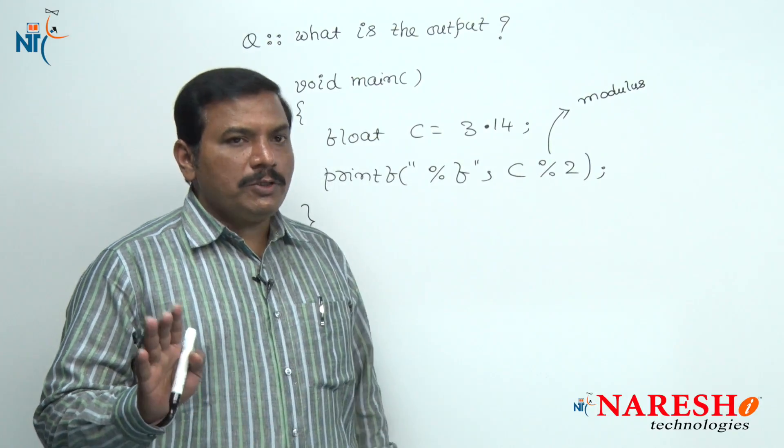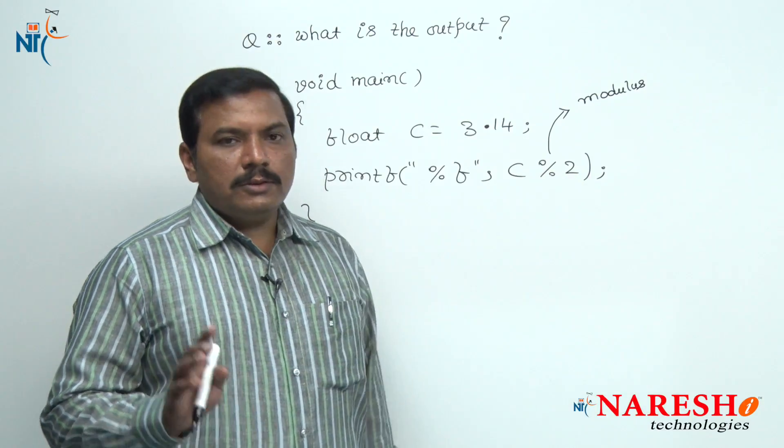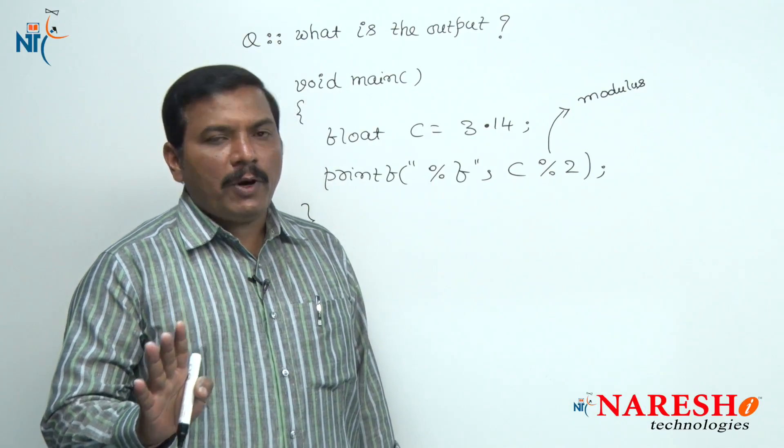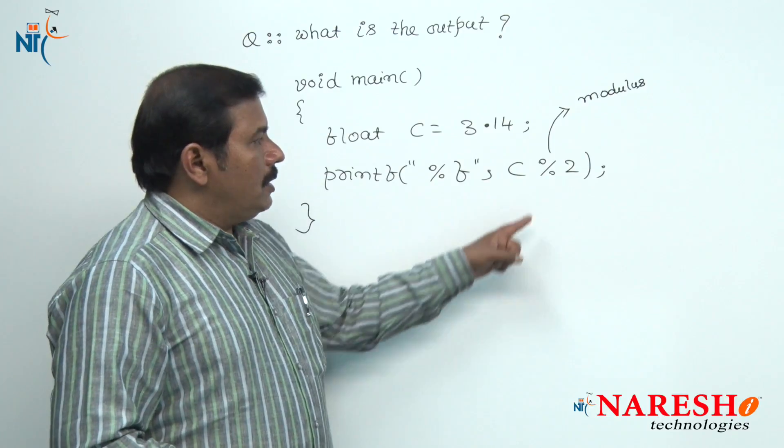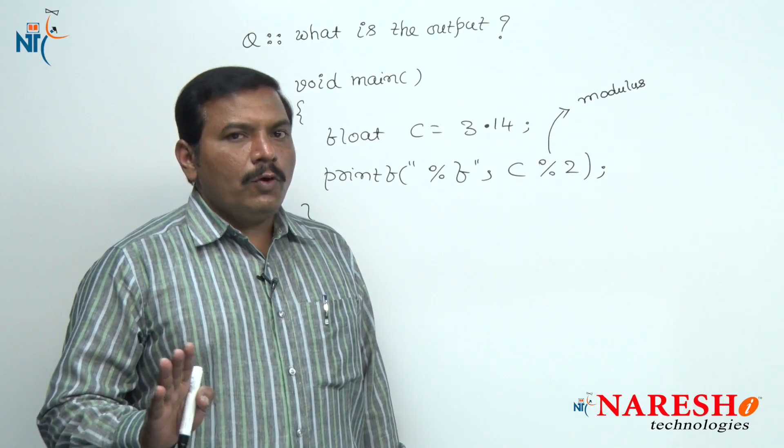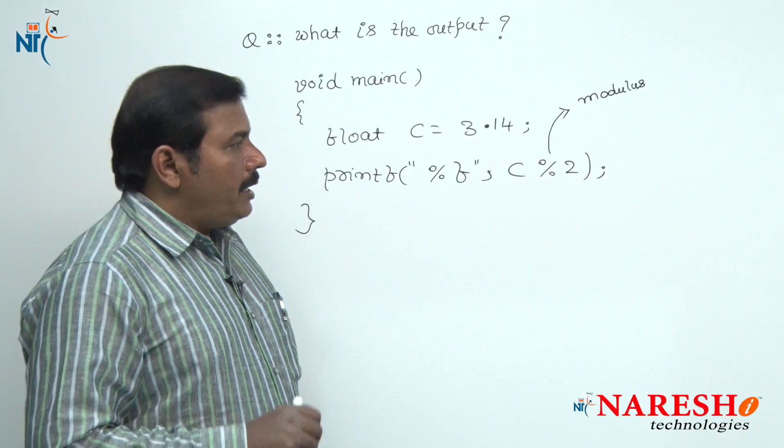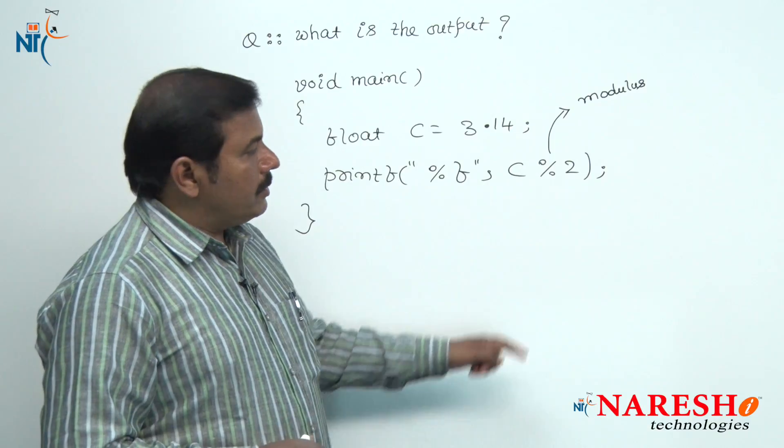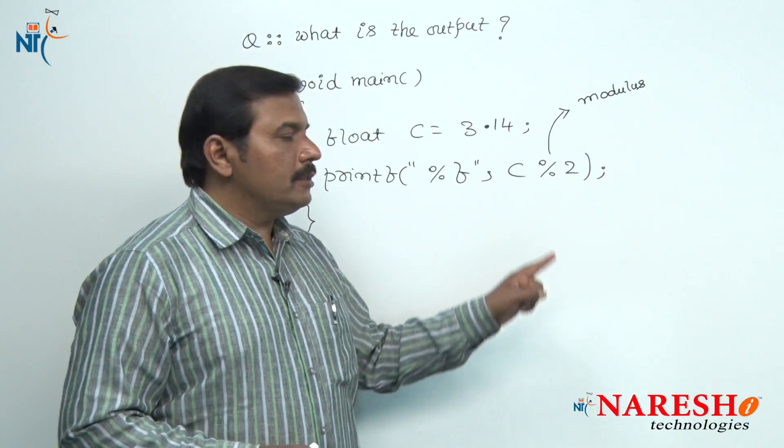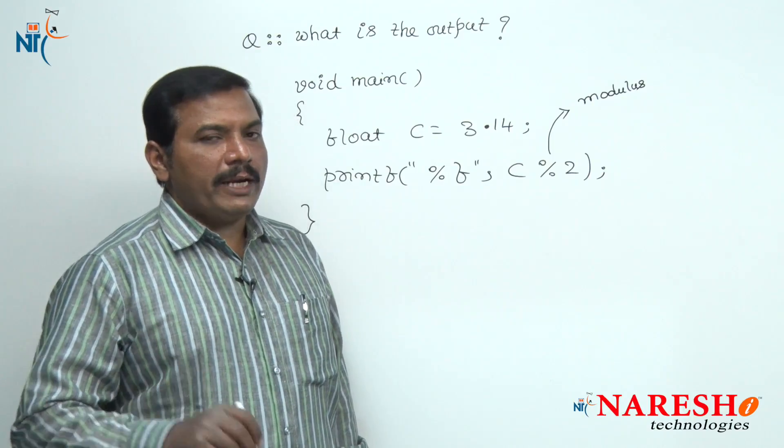Because for this modulus operator, both operands should be integer type operands. This modulus operator does not operate on floating point data or real data. Hence the rule here is that for modulus operator, both operands must be integer type operands.